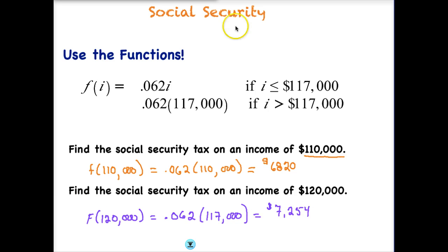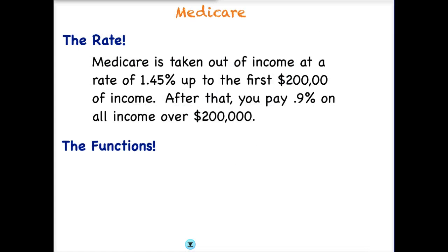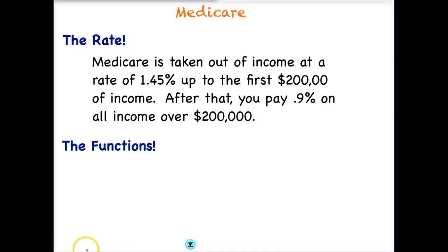Let's go ahead and look at Medicare. For Medicare, the rate is 1.45% up to the first $200,000 of income. After that, you have to pay 0.9% on all income over $200,000. So the tax doesn't go away — it just becomes a lower tax. Let's think about how we might write these functions. If you want to pause the video and give it a try on your own, that would be great, and then come back and we'll do it together.